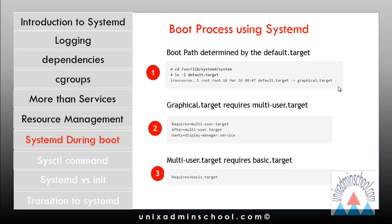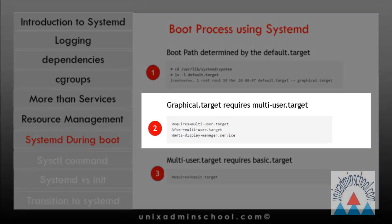To understand what targets, services, and other units start up with graphical.target, it helps to work backwards as systemd does. From the graphical.target file, we can see that it tells systemd to start everything in multi-user.target before starting graphical.target, using the directive 'Requires=multi-user.target'. Once that is done, the 'Wants' directive tells systemd to start the display-manager.service, which runs the GNOME display manager.